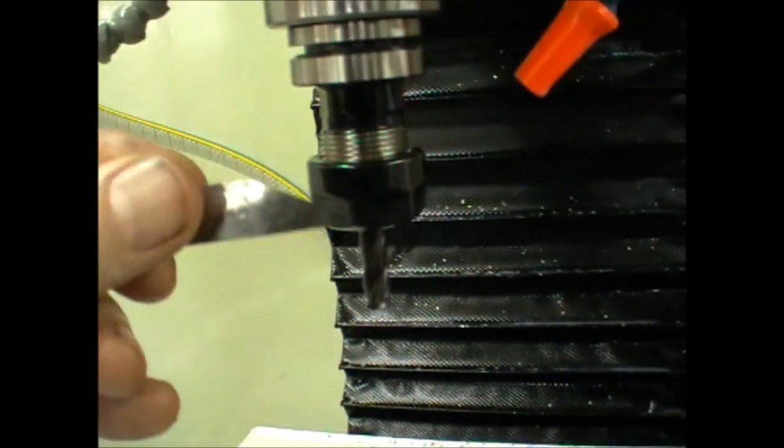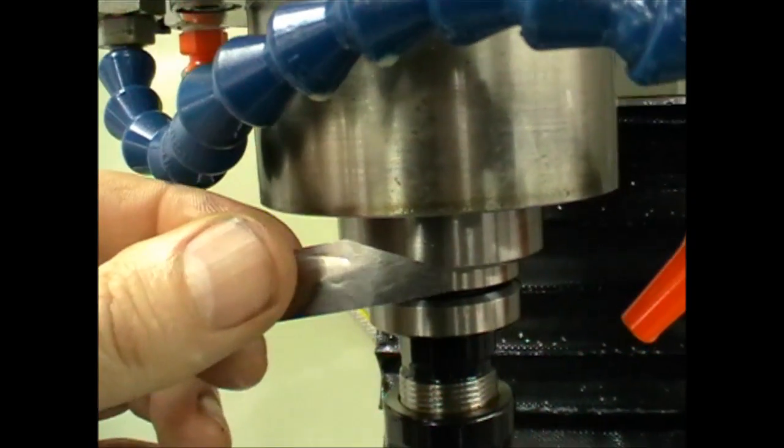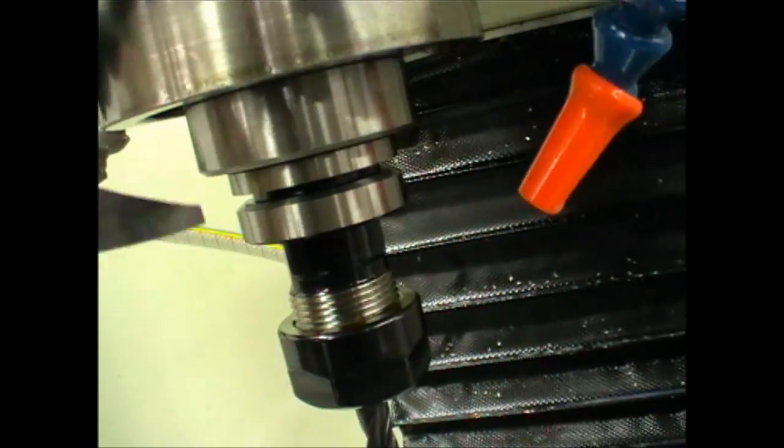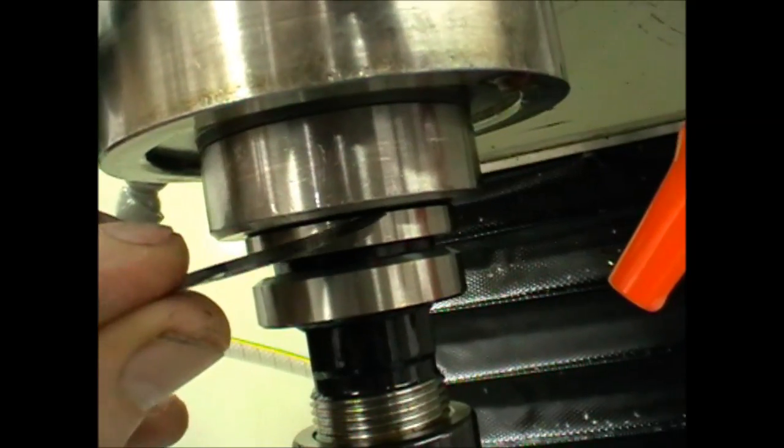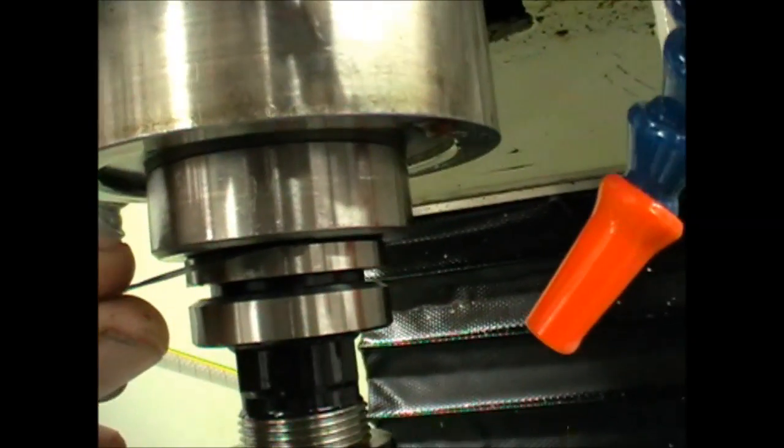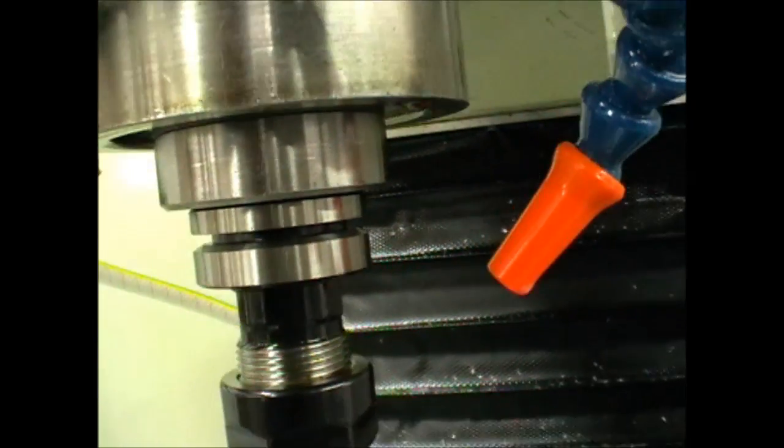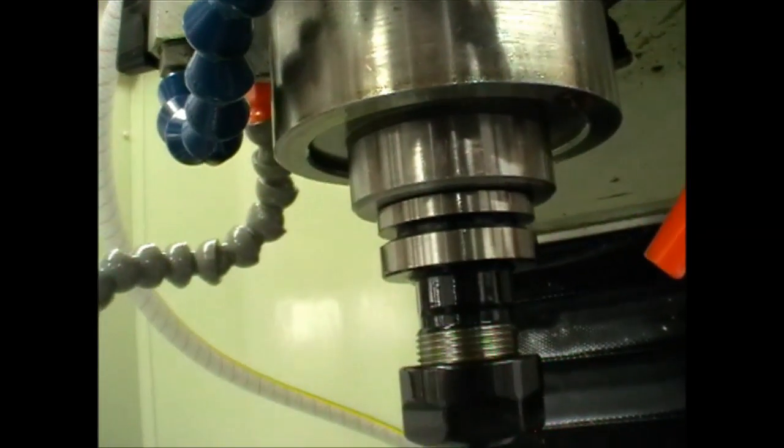It's not a bad idea to check with a feeler gauge in that gap if you're doing some heavy machining. Check in that gap to make sure the flange is fully in contact with the bottom of the spindle.